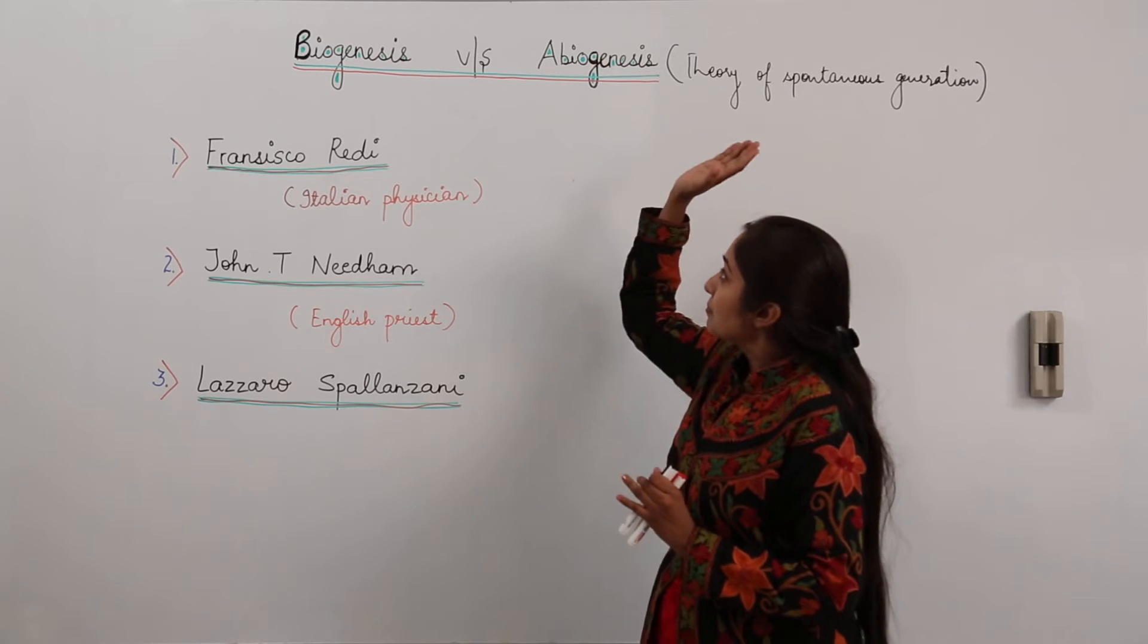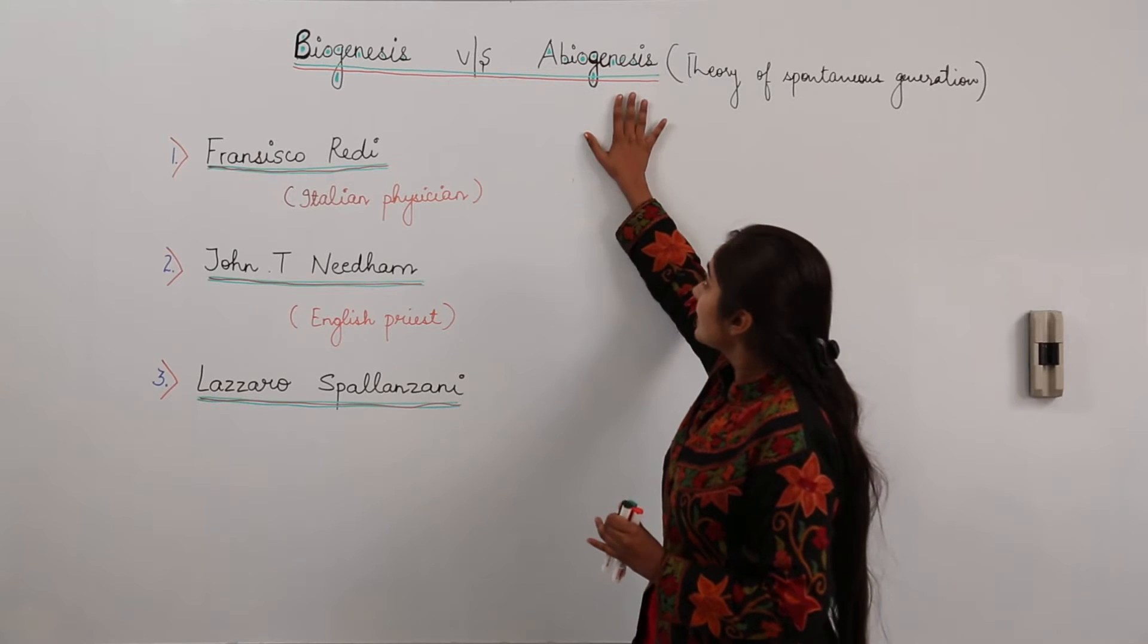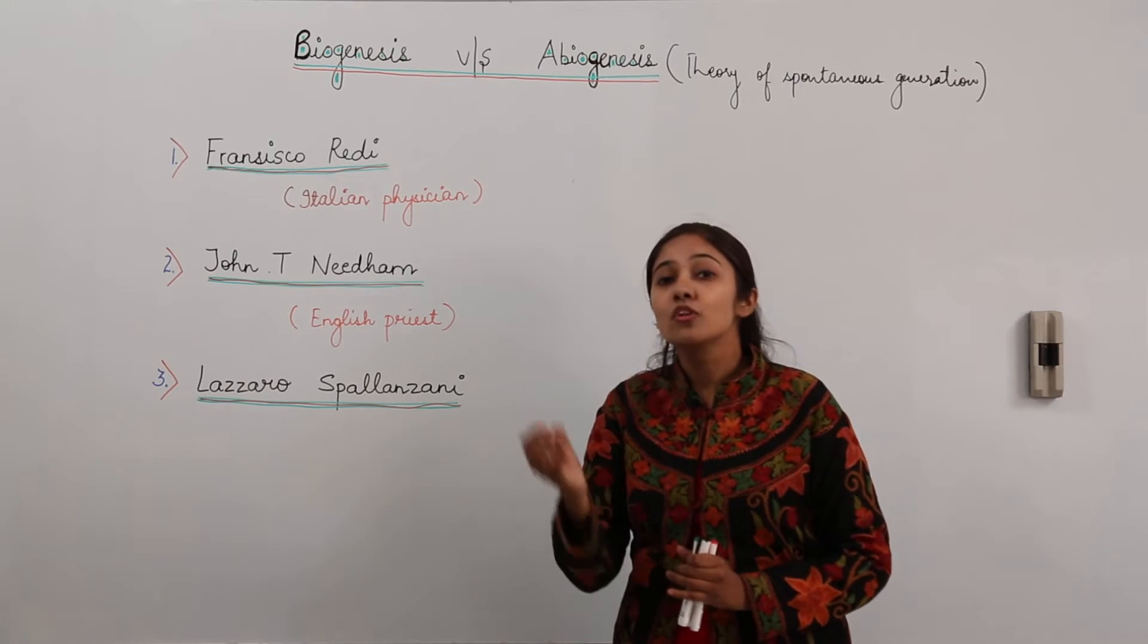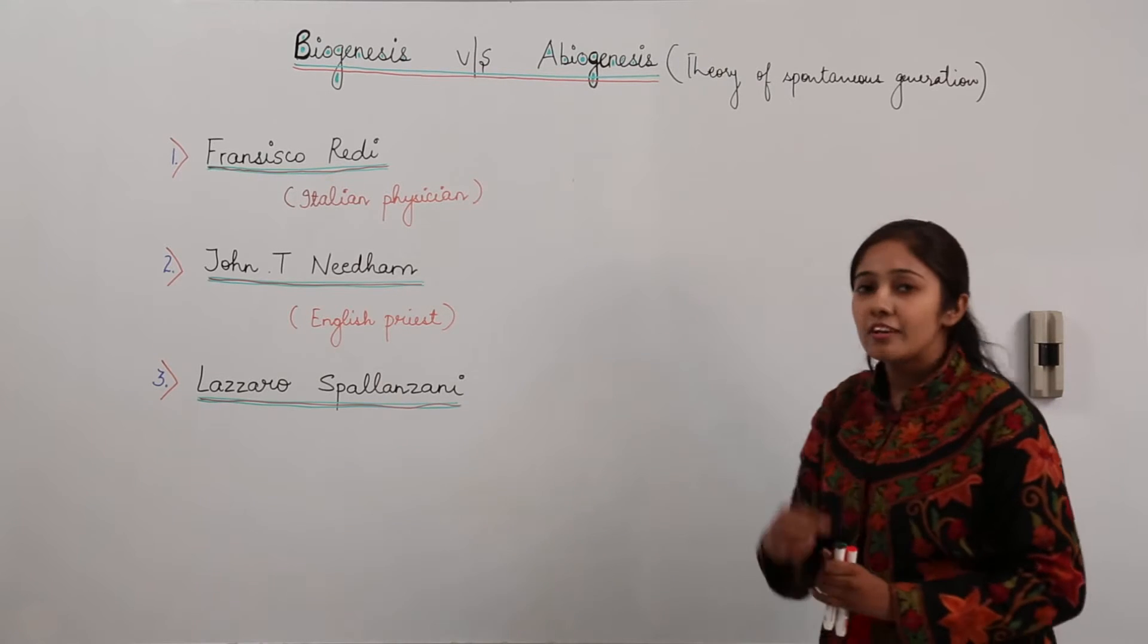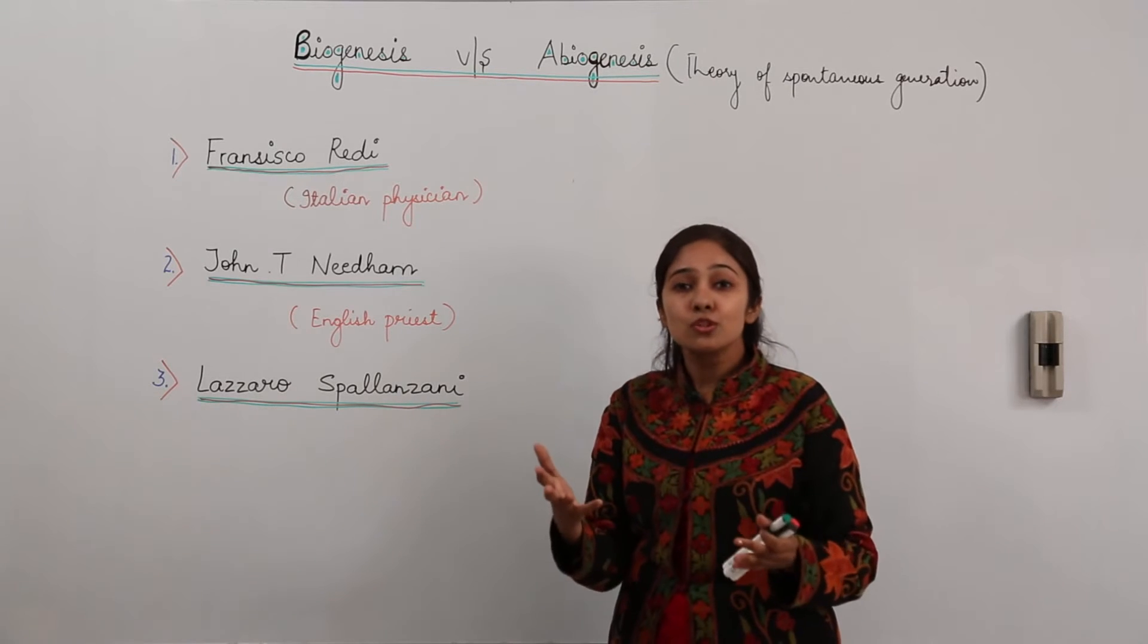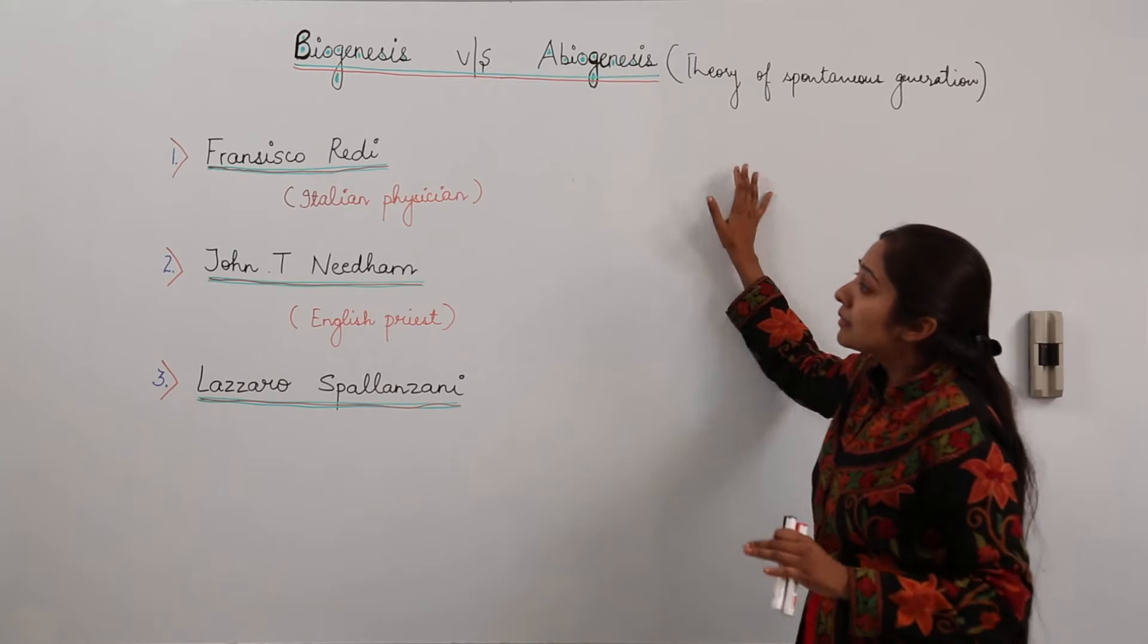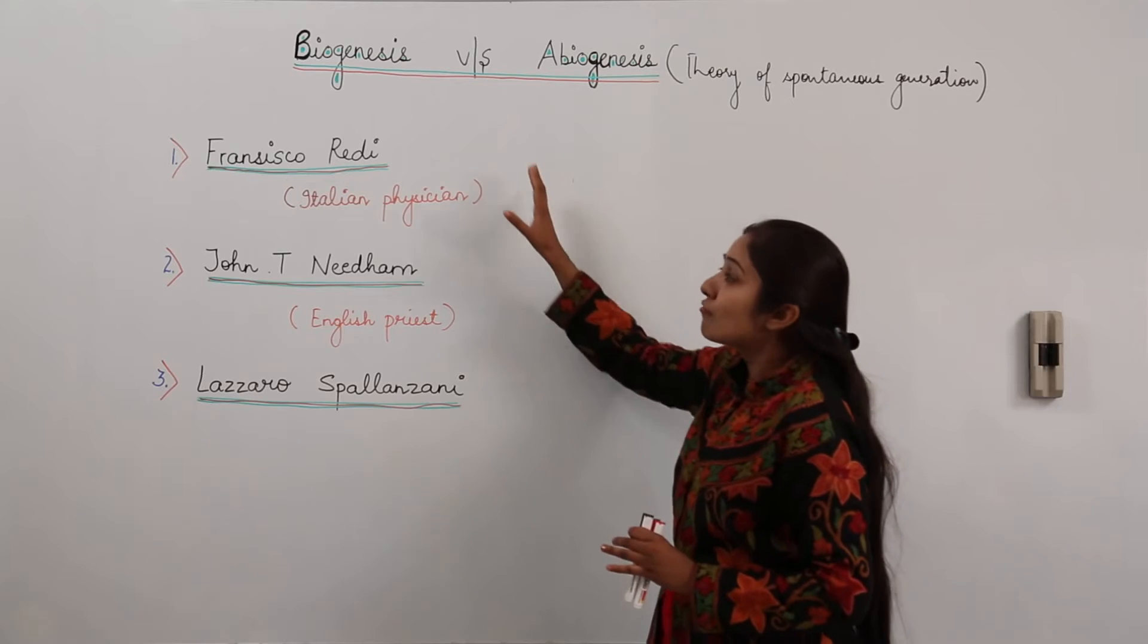We were discussing about many theories. Now here I am going to compare biogenesis and abiogenesis. Abiogenesis is also known as theory of spontaneous generation. This means that new life form exists from non-living matter, inanimate matter. For example, Aristotle gave the idea that rotten meat can produce flies, mice could be produced from dirty shirts. This concept of abiogenesis was prevalent for a long time but some scientists were curious to explain the concept of biogenesis.